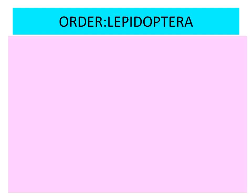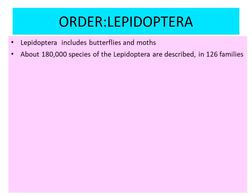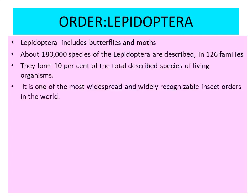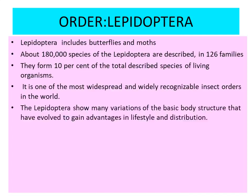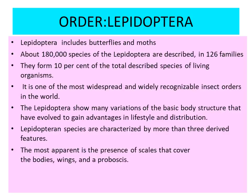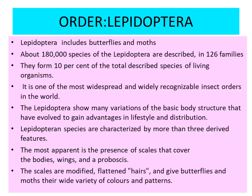Now coming to the second order, Lepidoptera. Lepidoptera includes the butterflies and the moths. About 180,000 species of Lepidoptera are described. They form 10% of the total described species of living organisms — one of the most widespread and widely recognized insect orders in the world. They show many variations of the basic body structure. Lepidoptera species are characterized by more than three derived features. The most apparent is the presence of scales on the body, wings, and proboscis. The scales are modified flattened hairs that give butterflies and moths their wide variety of colors and patterns.